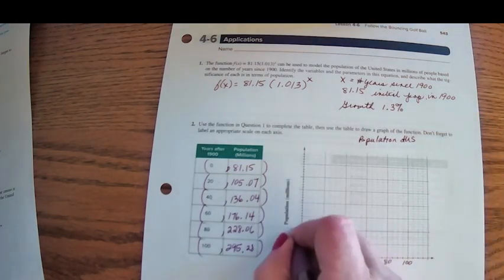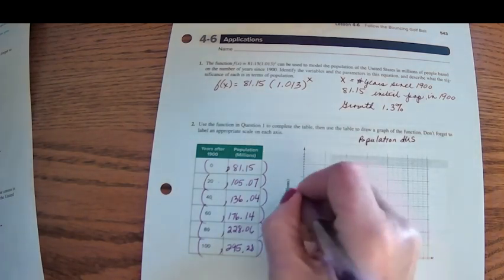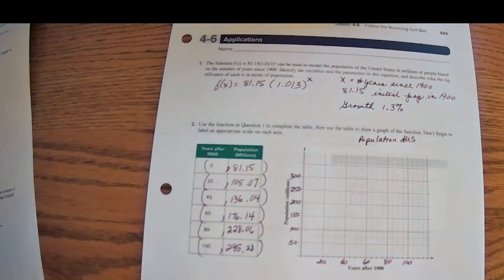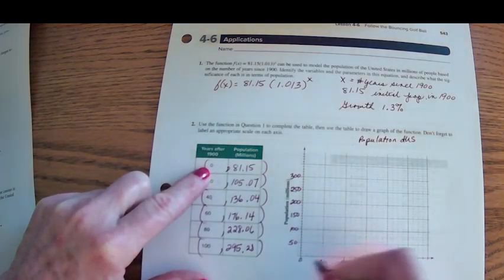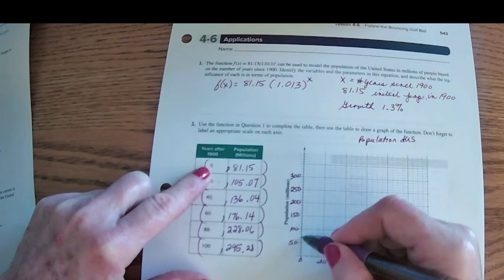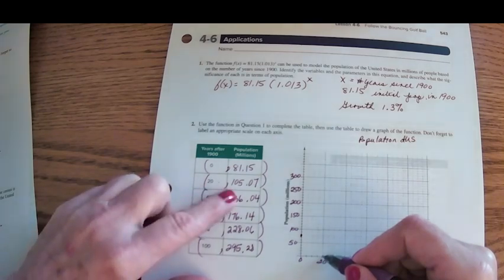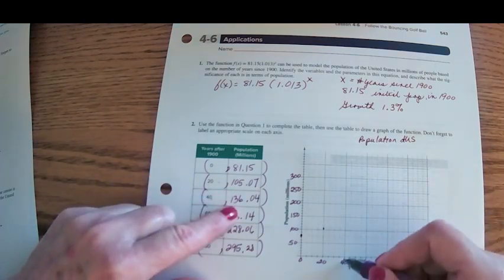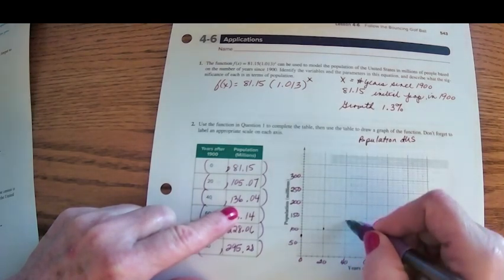So here's 50 million, 100 million, 150 million, 200 million, 250 million, 300 million. So now we want to graph this data. Zero, I'll go ahead and model it. Zero, 81. When x is 20, y is 105.7. Probably right there. When x is 40, the independent variable is 40, the dependent variable is 136. There's about 136.